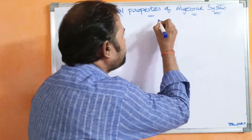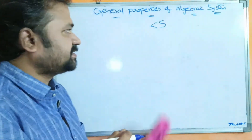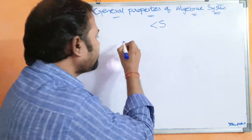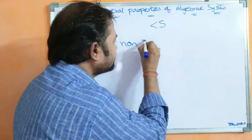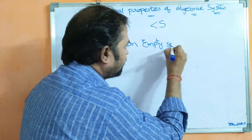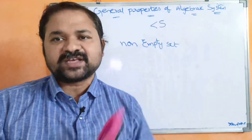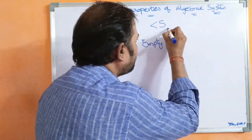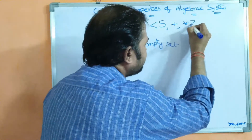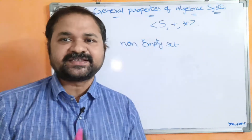An algebraic system contains a non-empty set. Here, S is nothing but a non-empty set — the set must contain some elements. And we can perform a collection of operations on the set, such as addition and multiplication. So, this is called an algebraic system.